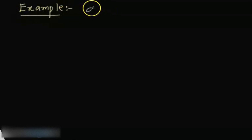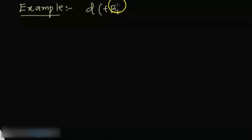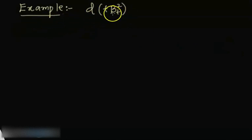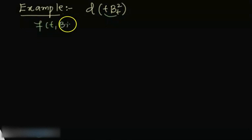I want to compute the differential of a function which is t times β_t squared — t times Brownian B_t squared. To do this, I need to apply the slightly generalized version of Itô's lemma. For that, I need to define a function, so I'll define f(t, β_t) = t times β_t squared.